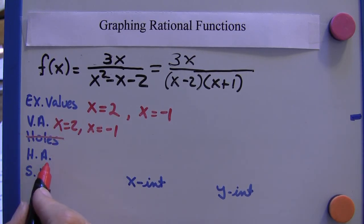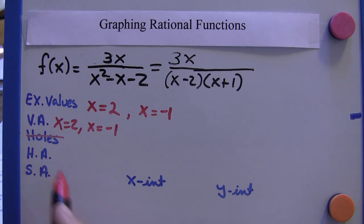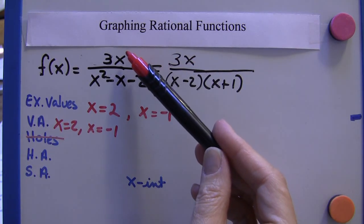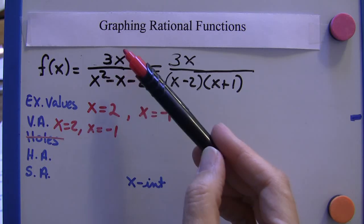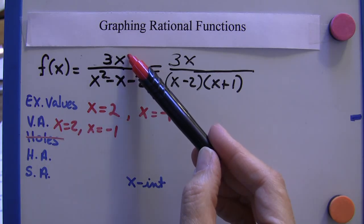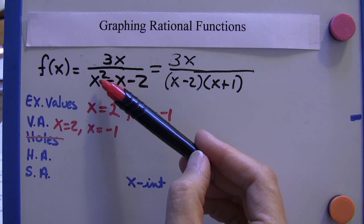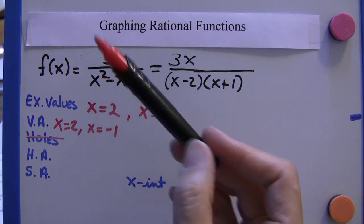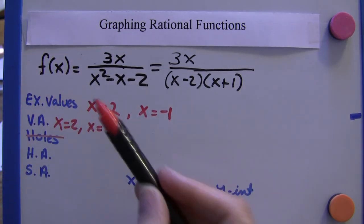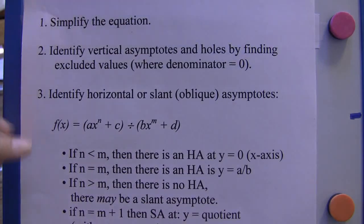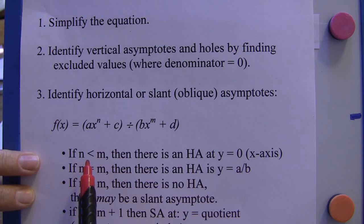Horizontal asymptotes. To find them, we want to pay attention to the leading exponents in the numerator and the denominator. The leading exponent in the numerator is a 1, although it's not written, and the denominator is a 2. So we want to look at the relationship there. 1 is smaller than 2. And in this case, the exponent in the numerator is smaller than the exponent in the denominator.